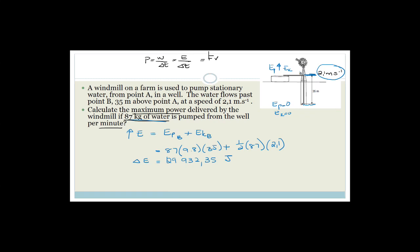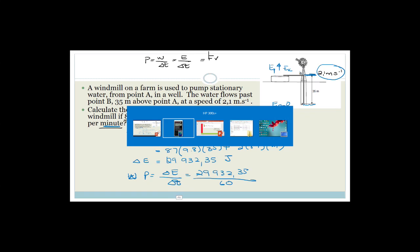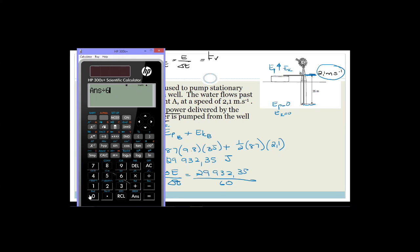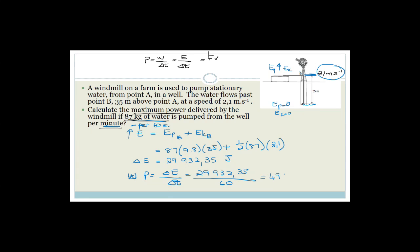That energy was pumped per minute, meaning per 60 seconds. Power equals delta E over delta T, so we divide 29,932.35 by 60, which gives 498.88 watts. The trick was catching that the mass was given per minute, not per second.